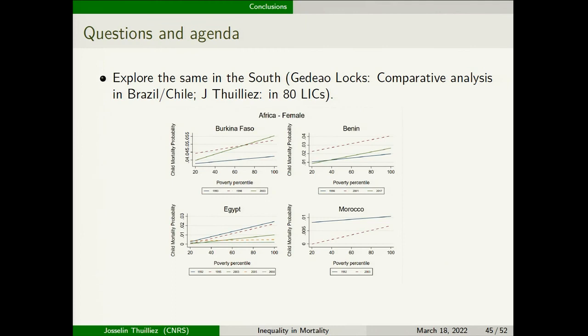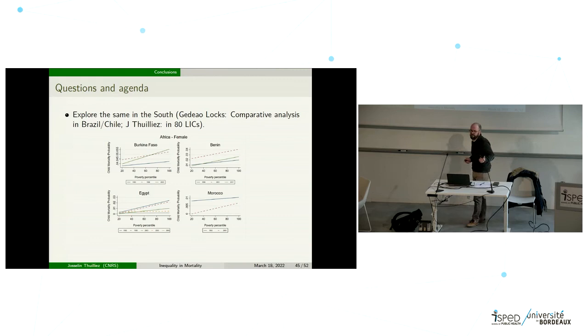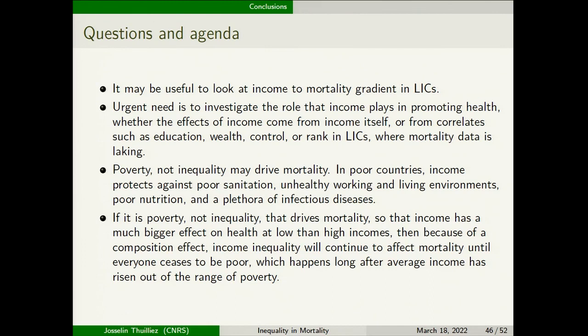Another exploration we are doing is applying the same approach in the south — I have a doctoral student who has done this in Chile and Brazil, and I am replicating this approach with 80 low-income countries. In low-income countries such as many African countries, we can mostly only use the child mortality rate, so these graphs are done with DHS infant mortality rate data. It may be useful to analyze low-income countries.